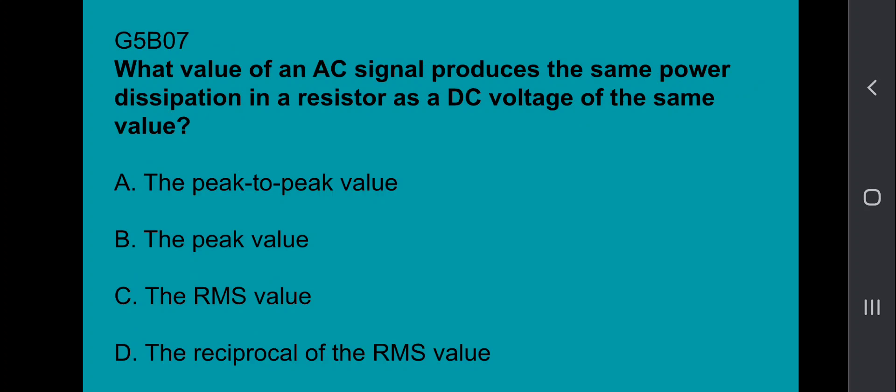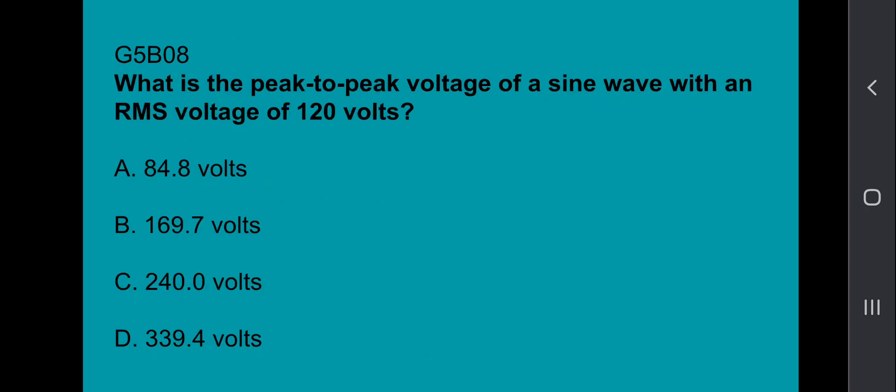G5B07, what value of an AC signal produces the same power dissipation in a resistor as a DC voltage of the same value? That's going to be the RMS value. G5B08, what is the PEP voltage of a sine wave with an RMS voltage of 120 volts? 339.4 volts.